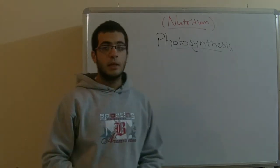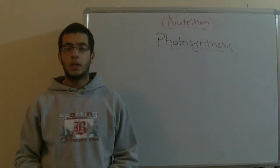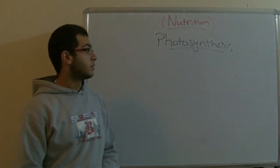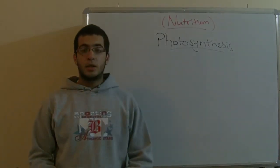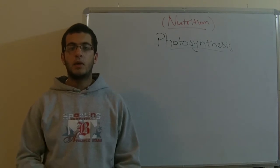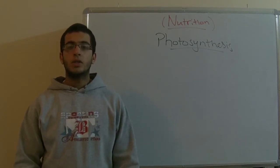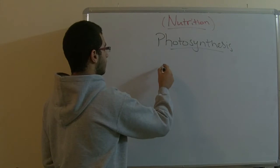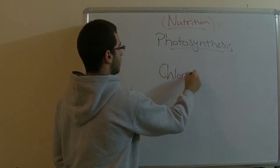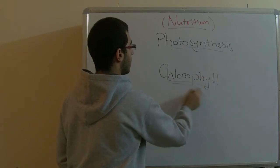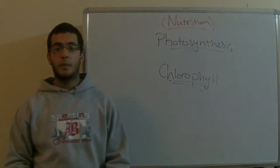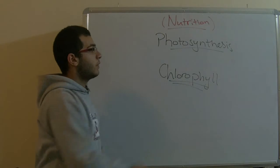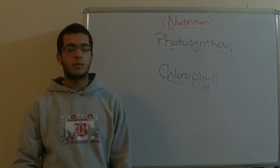Before starting talking about photosynthesis, we must mention that all the living organisms need energy in order to grow and maintain their bodies, reproduce and so on. This energy is the chemical energy that living organisms get through food, which is originally made through chlorophyll found inside the chloroplast of the plant through the photosynthesis process. So we can imagine how the photosynthesis process is very important for all living organisms on Earth.